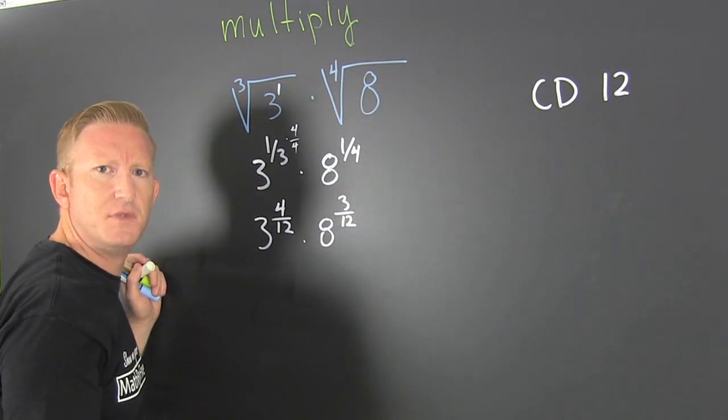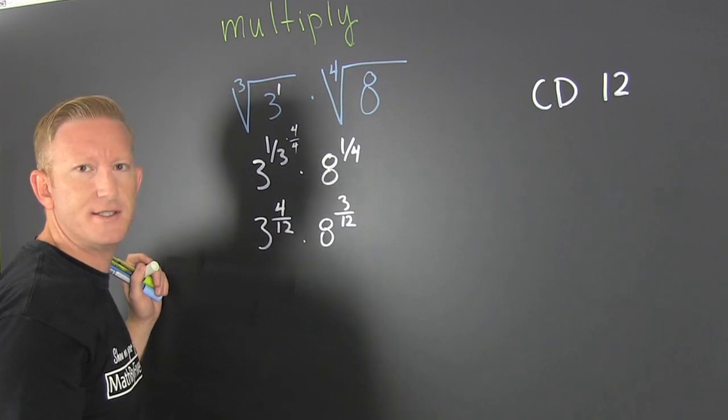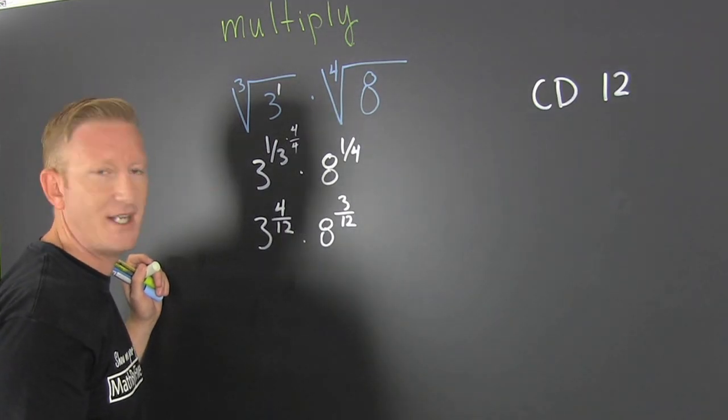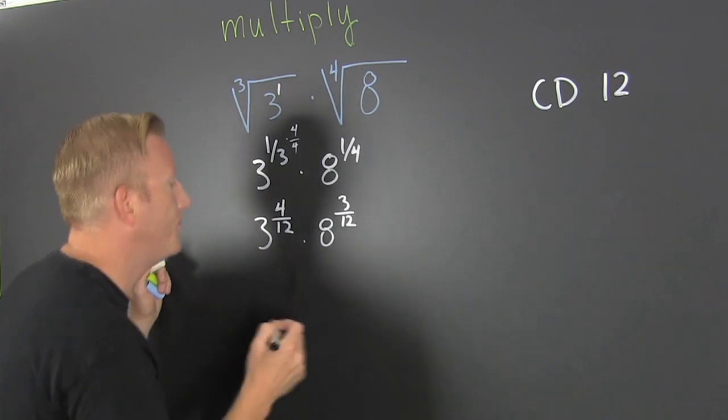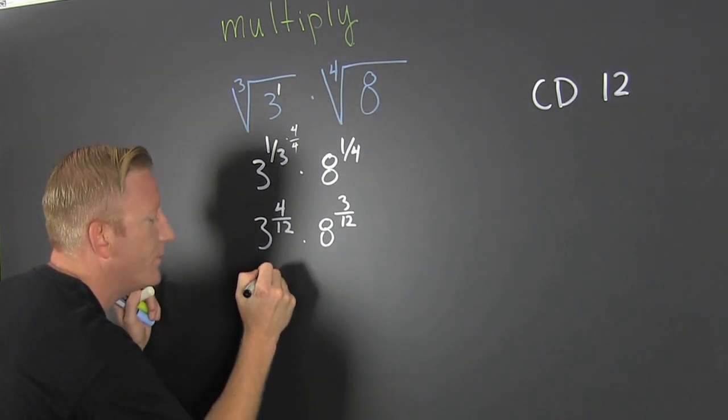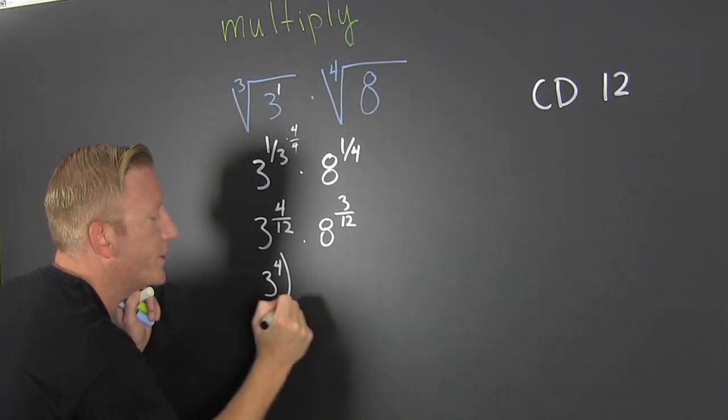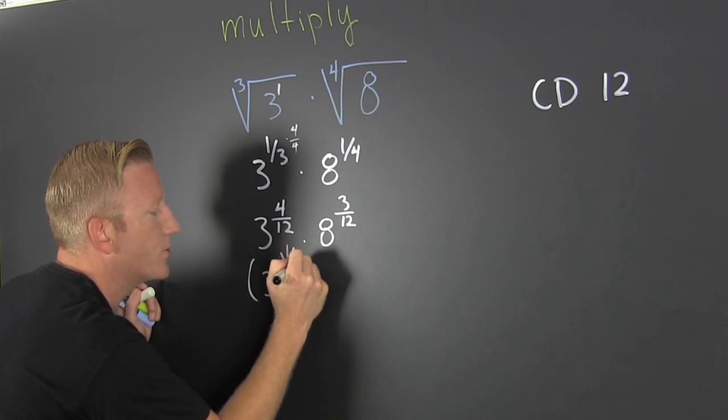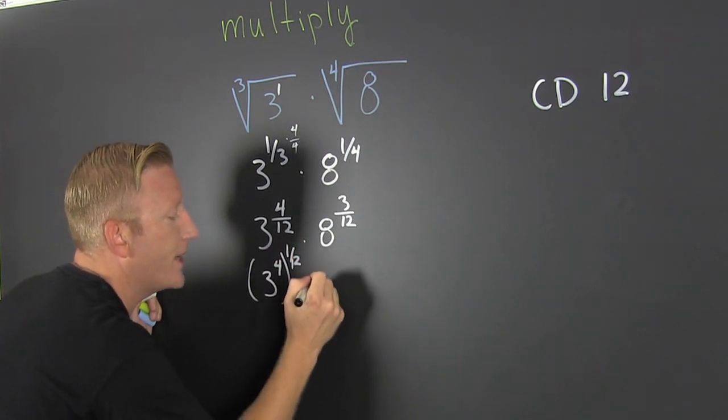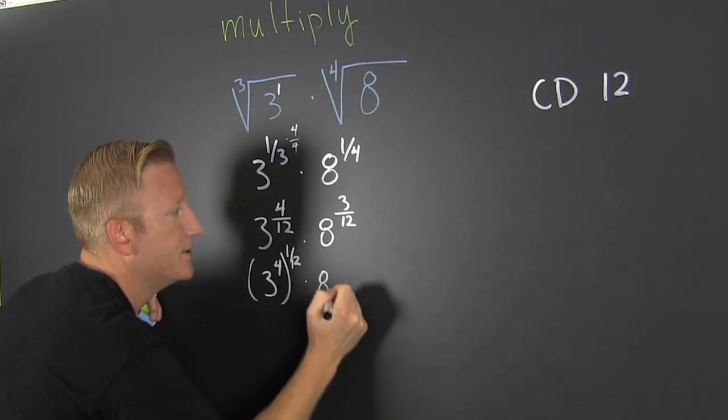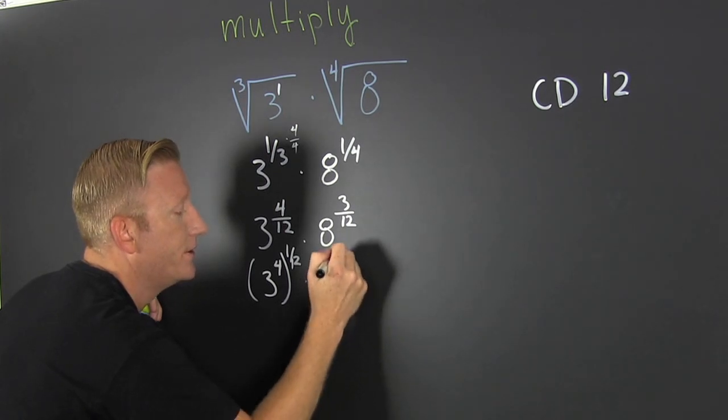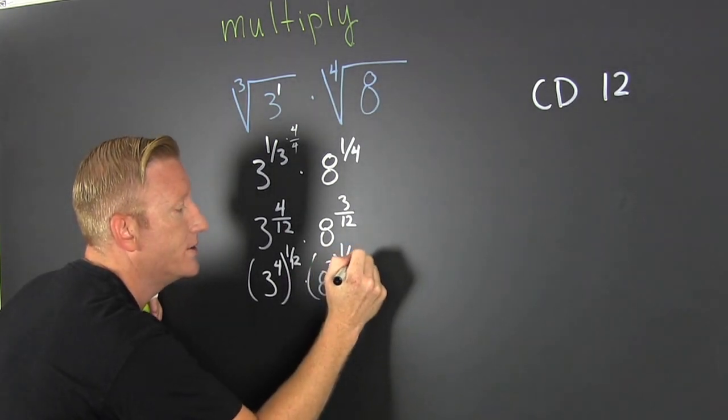This is going to end up in big numbers, I know. That's the stuff you don't like. I rewrite this as 3 to the fourth to the one-twelfth times 8 to the third to the one-twelfth.